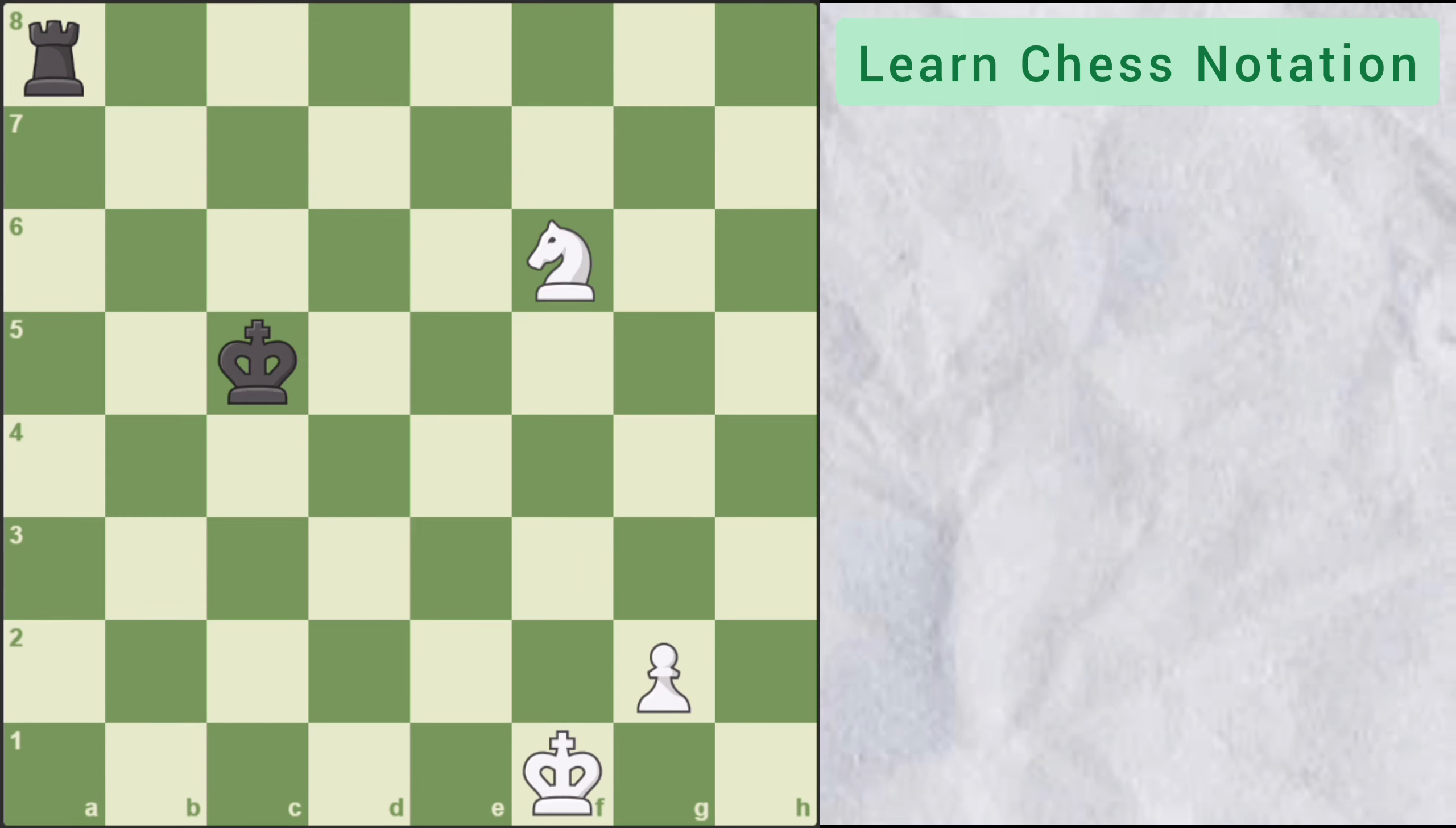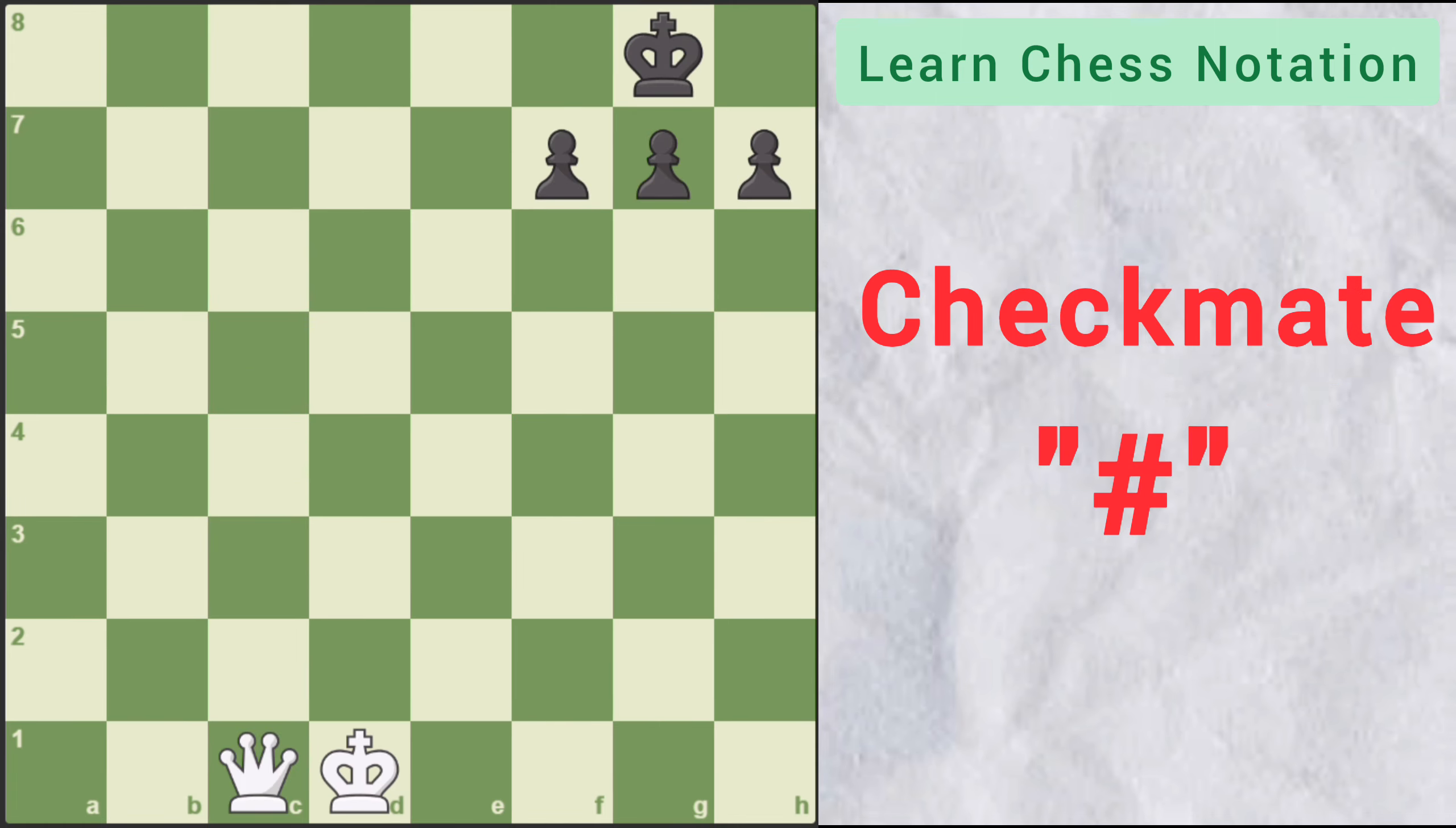Now let's look at the symbol for a check. If any piece gives a check to king, then plus symbol is used at the end. Here if knight gives check to king, then it will be written as capital N for knight followed by h7, the name of the square and a plus symbol at the end which denotes a check.